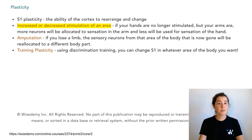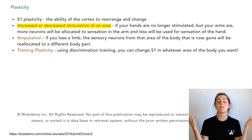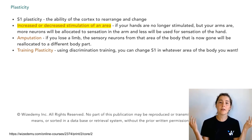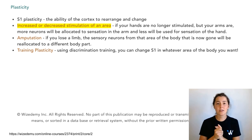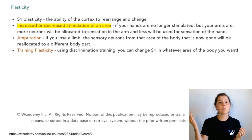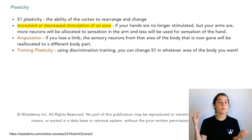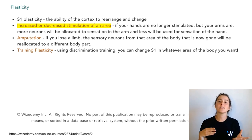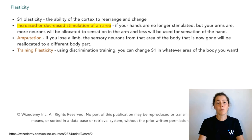The same thing could happen if we decrease the stimuli. So if I stopped using my hands altogether and there was no longer any stimulus, the somatotopy — the post-central gyrus — would be able to use those neurons to dedicate them to an area that is more often stimulated.